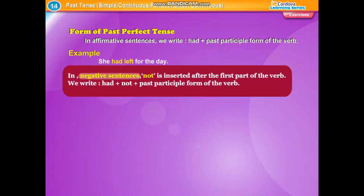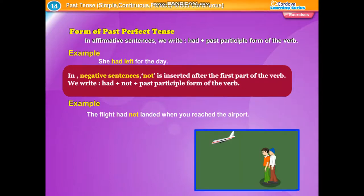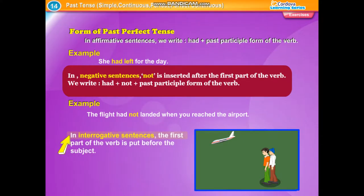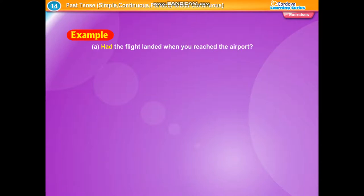In negative sentences, 'not' is inserted after the first part of the verb. We write: had plus not plus past participle form of the verb. Example: The flight had not landed when you reached the airport. In interrogative sentences, the first part of the verb is put before the subject. Examples: Had the flight landed when you reached the airport? Why had he not come?